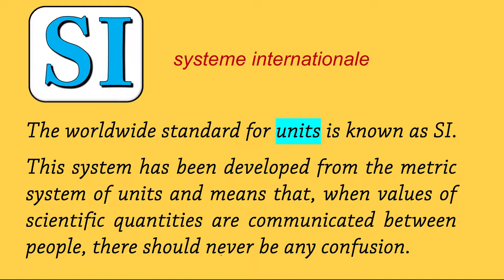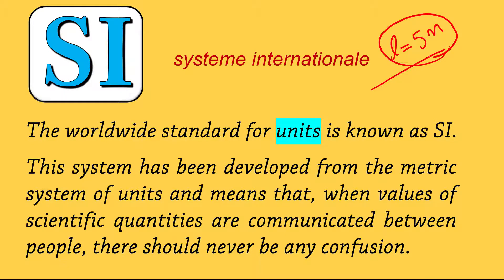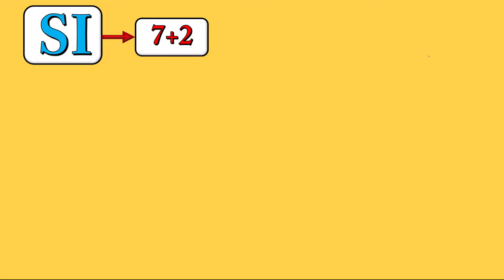What is SI? The worldwide standard for units is known as SI. This system has been developed from the metric system and means that when values of scientific quantities are communicated between people, there should never be any confusion. For example, if I report l equals five meters, it is understandable in any country because we have an agreement on the meter. SI will include seven plus two units.